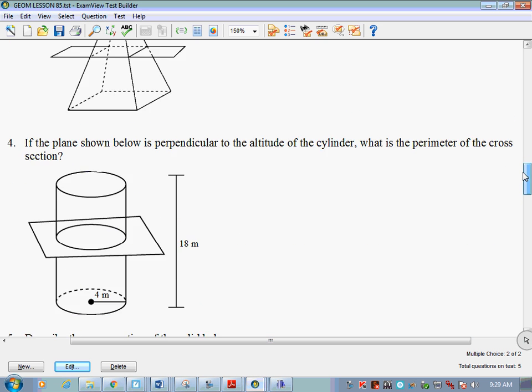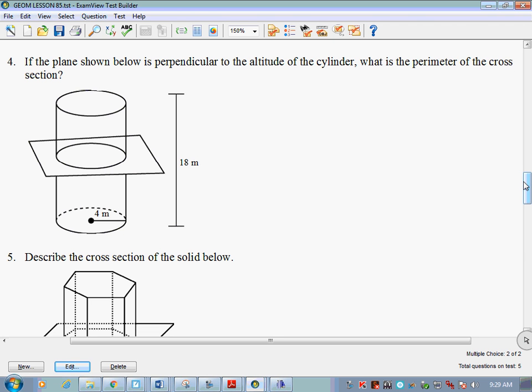Let's look at number four. If the plane shown below is perpendicular to the altitude of the cylinder, what is the perimeter of the cross section? Is the perimeter of the cross section going to be the same as the perimeter of the base? Yes. How do I find the perimeter of the base if it's a cylinder? What shape is the base? Circle. What's another term for the perimeter of a circle? Caleb, you said it, what is it? Circumference.